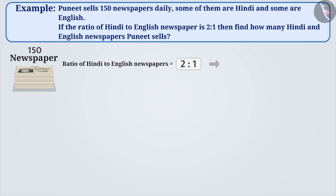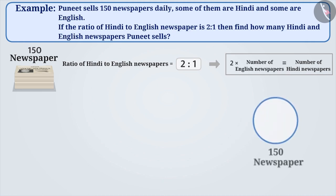Let me tell you. This ratio represents that Hindi newspapers are 2 times of English newspapers. That means, if we divide 150 newspapers into 3 equal parts, then 1 part will represent English newspapers and 2 parts will represent Hindi newspapers.